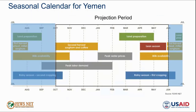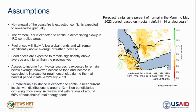Turning to expectations for the projection period: looking back at the seasonal calendar, the beginning of 2023 is generally an off-season for agriculture in many rural areas. Beyond that, Yemen's first rainy season typically occurs from March to May, and alongside this, agricultural activities will again begin providing households with some increased seasonal income.